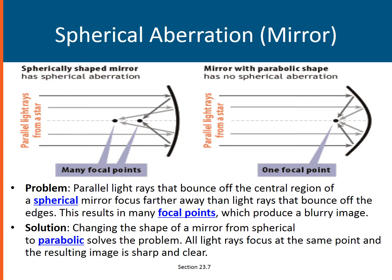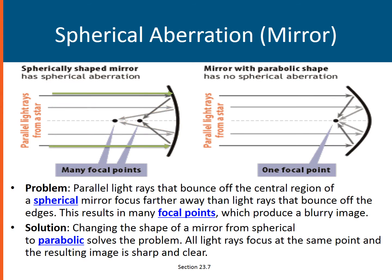Spherical aberration in mirrors. This problem arises because incident rays that are close to the principal axis, such as these red rays here, would converge at a location that is relatively far from the mirror, compared to rays that are far from the principal axis. These green rays, once they hit the mirror, would be reflected and converge at a point that is relatively closer to the mirror. As a result, we have many focal points, which will produce a blurry image.